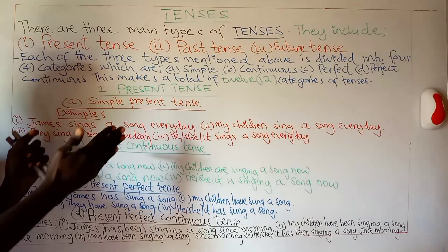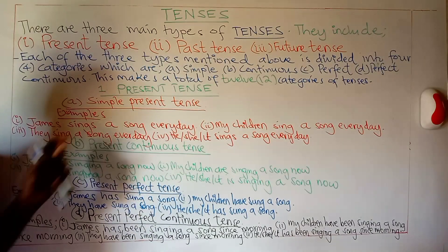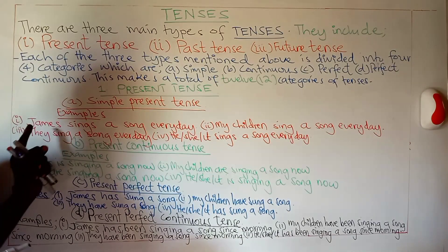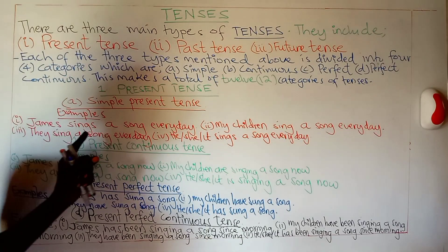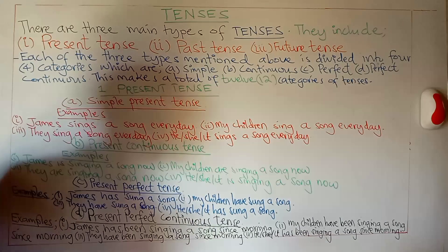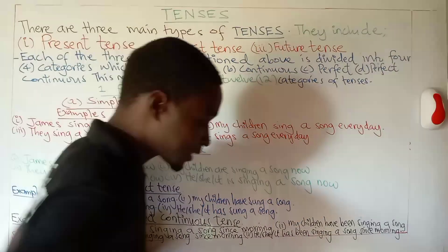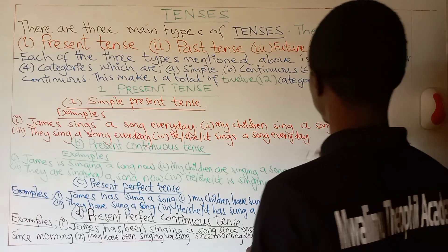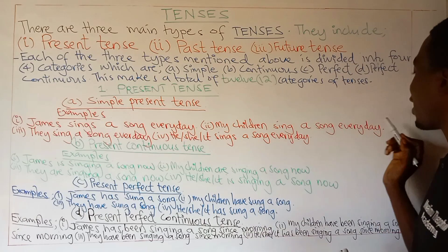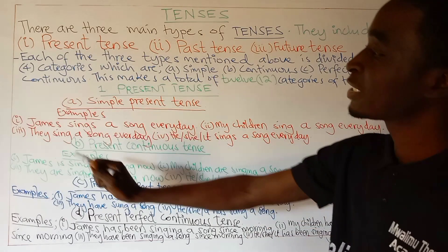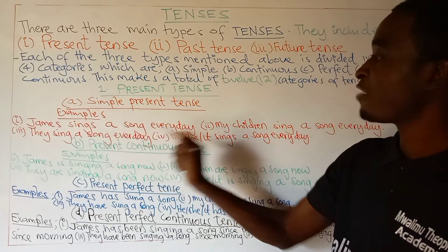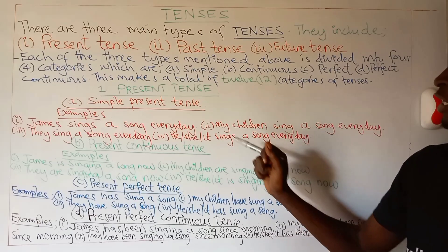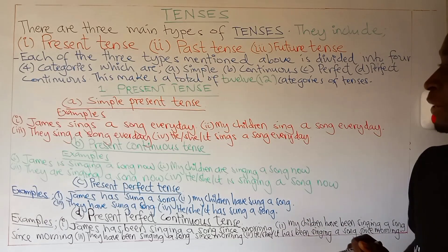We have different examples of sentences which are in simple present tense, as you see here. The first sentence is: James sings a song every day. Our second sentence is: my children sing a song every day. Our third: they sing a song every day. Our fourth sentence is: he or she or it sings a song every day.